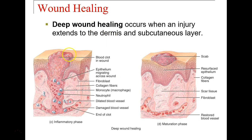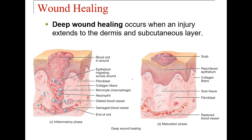Deep wound healing means we have gone past the epidermis — into the dermis, the subcutaneous layer, or deeper. This is where scar tissue forms. The connective tissue in the dermis is not well organized, so when fibroblasts reproduce that area of skin, it is not laid in an organized manner. This creates hard, non-pliable scar tissue with very little blood supply running through it, resulting in a lasting scar.